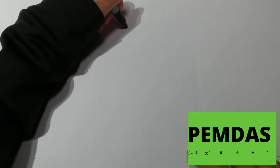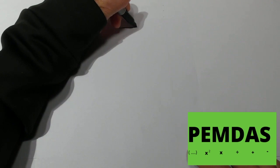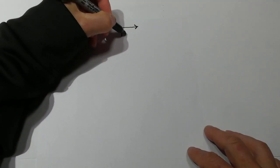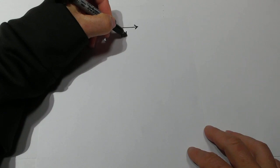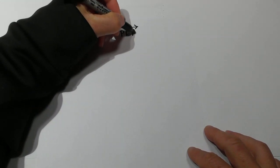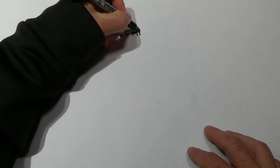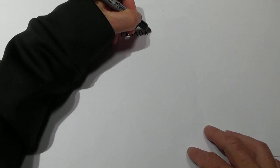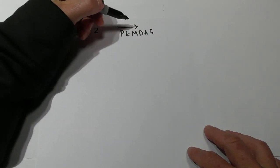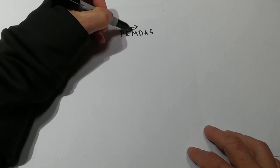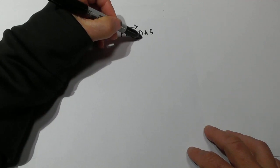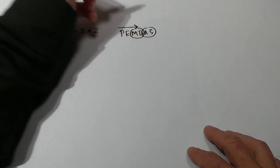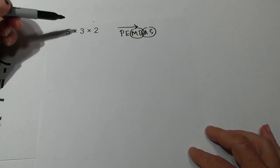You always work the problem from left to right and we can use PEMDAS: P for parenthesis, E for exponents, M for multiplication, D for division, A for adding, S for subtraction. We circle M and D because they go together, and A and S go together as well.